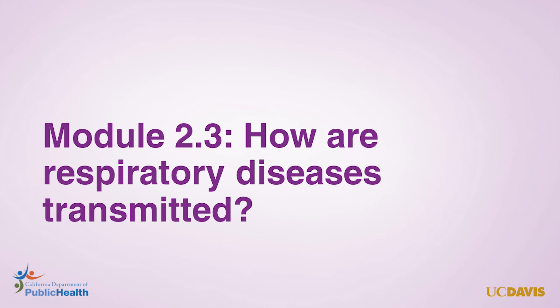We learned in the previous module that bacteria and viruses, collectively called germs, cause respiratory infections. And while antibiotics and vaccines are important in the treatment and prevention of diseases, we can also play a big role in reducing the spread of infectious respiratory diseases by properly monitoring our indoor air quality. To understand the connection between these diseases and indoor air quality, we first need to understand how germs are transmitted from person to person.